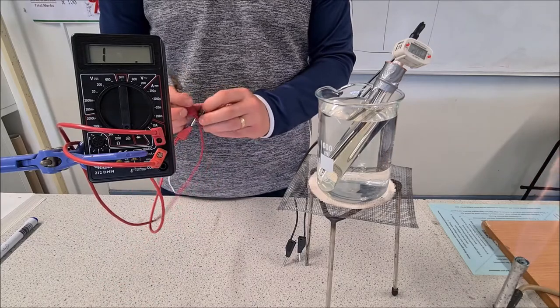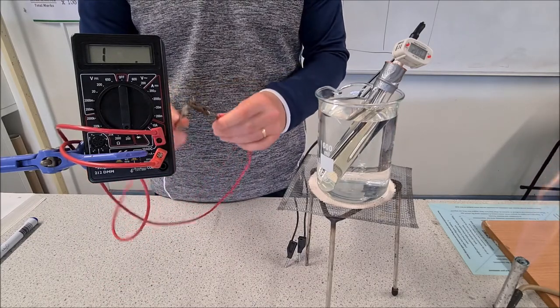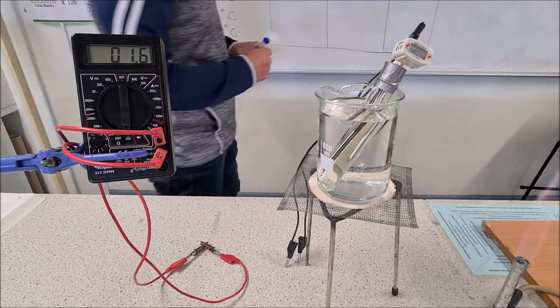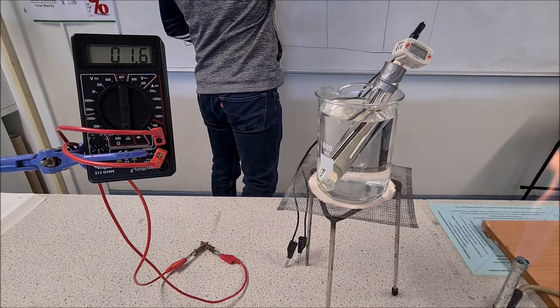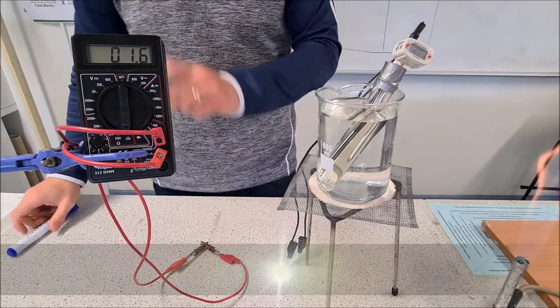First thing we need to do is measure the internal resistance of our ohmmeter. Our internal resistance is 1.6 ohms. So that's the internal resistance of the ohmmeter.